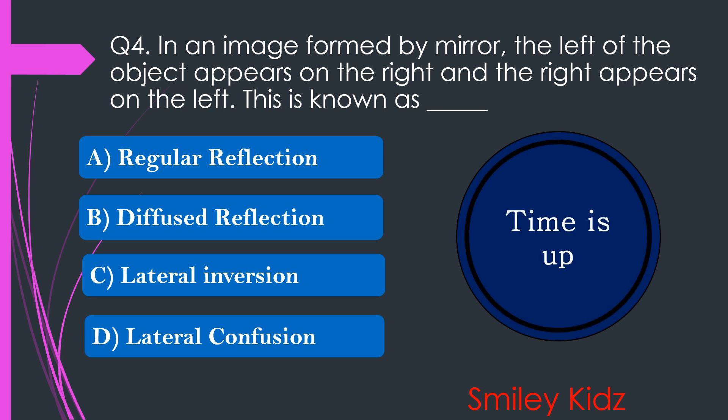Your time is up. The right answer is option C. Lateral inversion. In an image formed by a mirror, the left of the object appears on the right and the right appears on the left. This is known as lateral inversion.